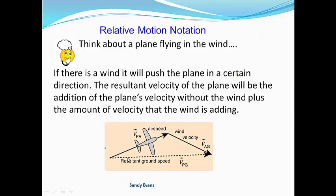And it might end up going in a different direction than it headed out in. So the resultant velocity of the plane is going to be the addition of the plane's velocity without the wind plus the amount of velocity that the wind is adding.